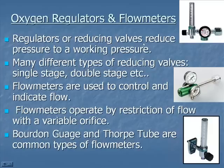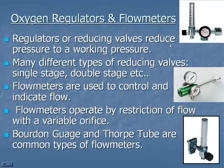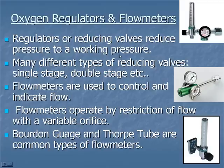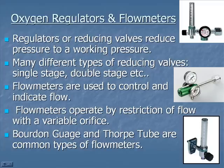That brings us to the regulator portion or flow meters. Once the liquid oxygen is piped and turned into a gaseous state through the hospital piping system, we need a way to deliver that gas to the patient. It comes through the piping at around 50 psi, so we've got to reduce it down. We have a variety of flow meters or regulators designed to reduce it from 50 psi down to a flow we can deliver to the patient.